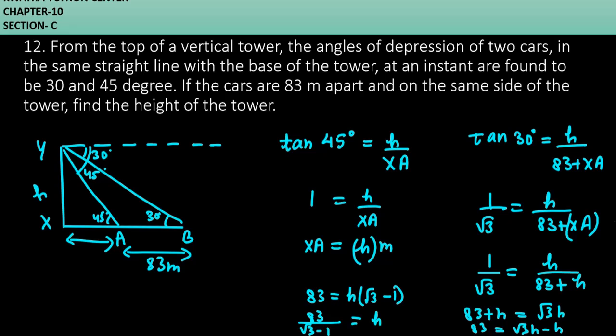83 over root 3 minus 1 is your answer for this question that is height of the tower. Now, we will be moving to the next question which is 13th one.